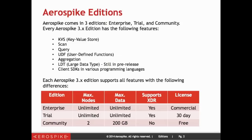All three of these have something in common, which are the following features: the standard features for Key Value Store, well-known in Aerospike 2. There's also the ability to do scans, queries on the data, user-defined functions that run on the server side, aggregations, large data types — which are still in pre-release but available for testing — and any of the different client SDKs.